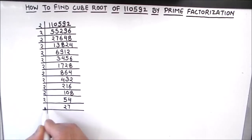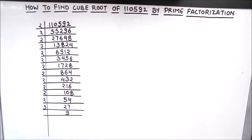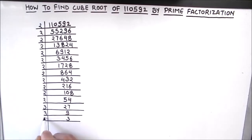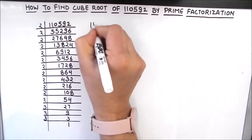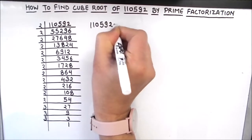Now we got an odd number, so we are going to divide it by 3. 3 times 9 is 27, 3 times 3 is 9, and 3 times 1 is 3. So our number is fully divided. Now we are going to write this number as the product of its prime factors.